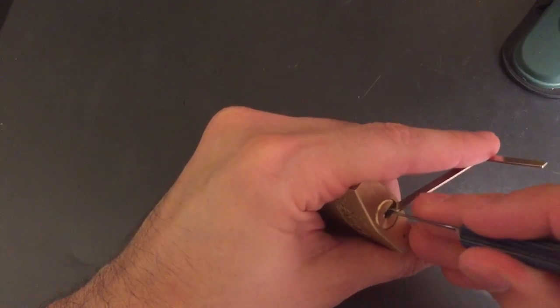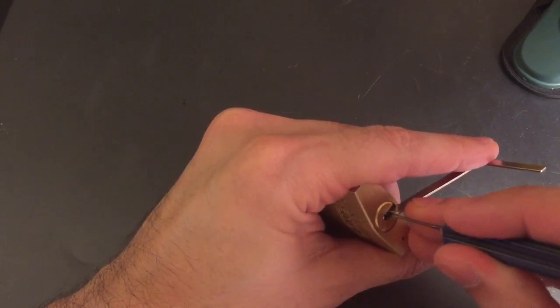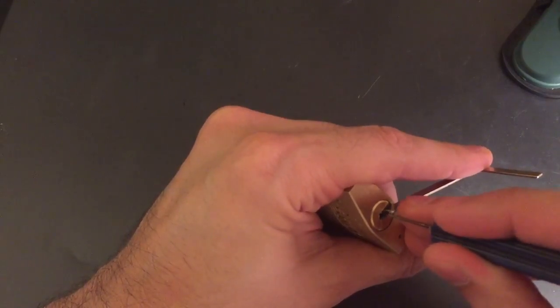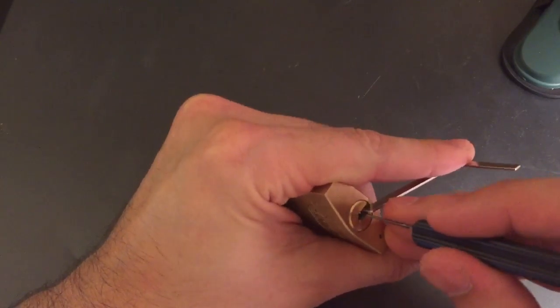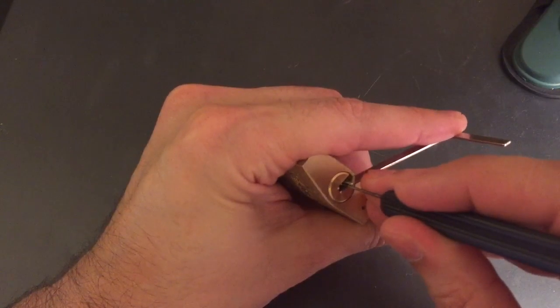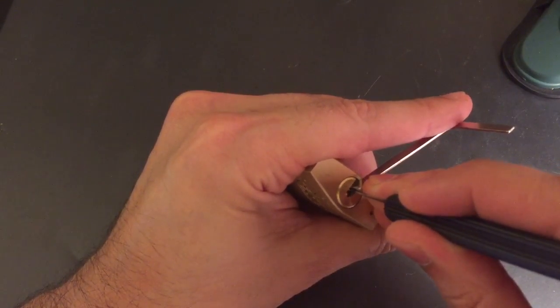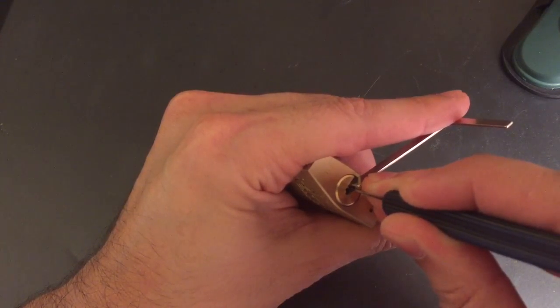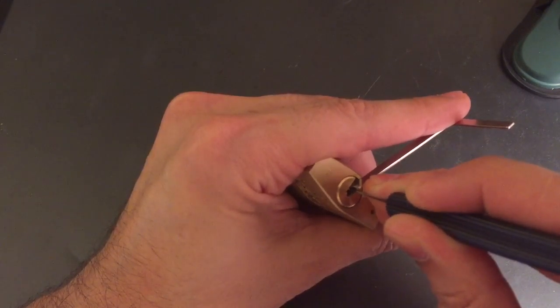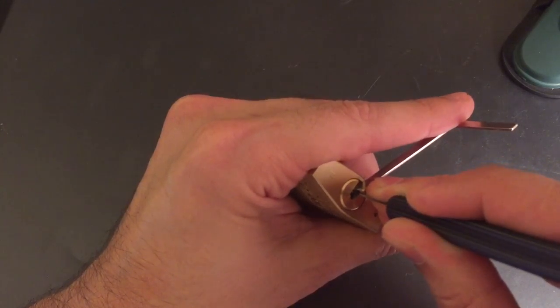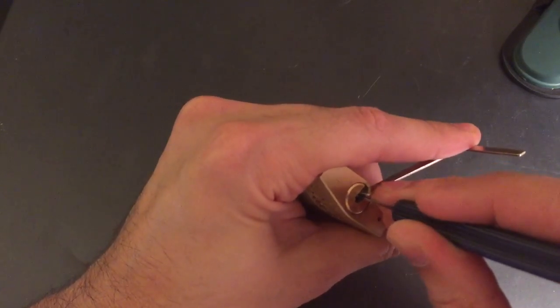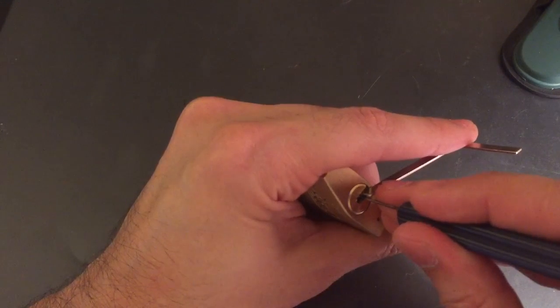I stick this in and just slide it back looking for a binder and it hits on number four and that dropped me into a false set. I'm going to go back again. Number five is giving me counter rotation and rather than pushing up with my pin I just let up with the tension wrench and try to let five drop into place and I think I did that.